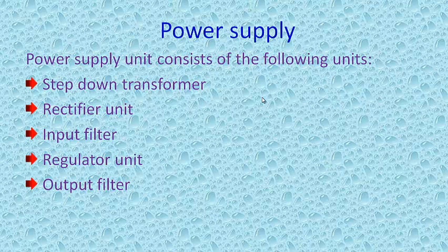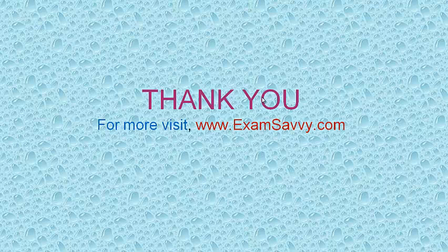The regulated output is passed through an output filter where a capacitor again acts as a filter — charging at the positive half cycle and discharging at the negative half cycle. This time the output filter allows only DC voltage and not AC voltage. That is the output of the power supply unit. This is the working of the electronic voting machine. Thank you for watching this video — for more, you can visit examsavvy.com.